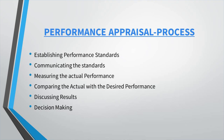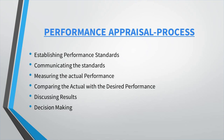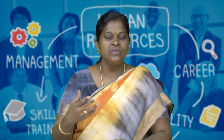The performance appraisal process: first, establish performance standards and communicate them — for example, a sales target of selling 10 watches per day. Then measure the actual performance — if only 6 watches were sold, compare the actual with the desired performance. Discuss results to identify gaps — such as convincing customers better. Finally, make decisions — more training, a different role, or a billing job.